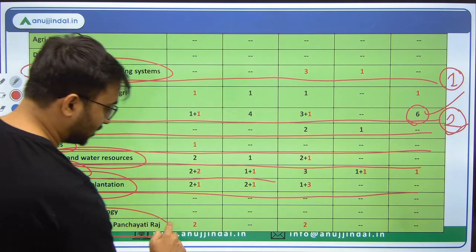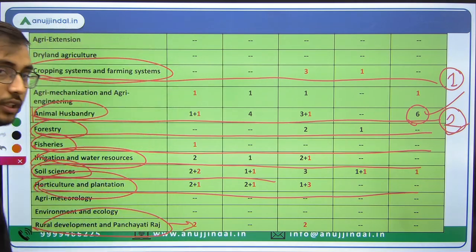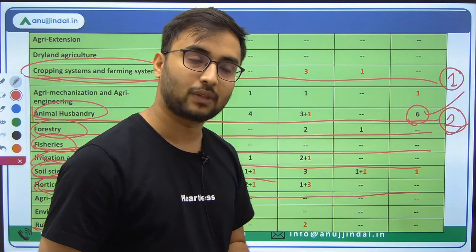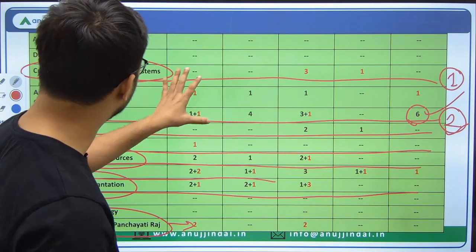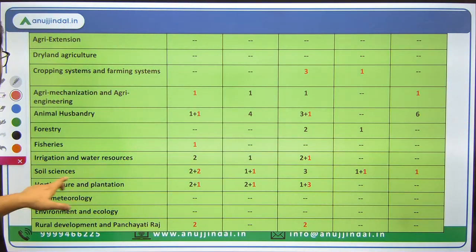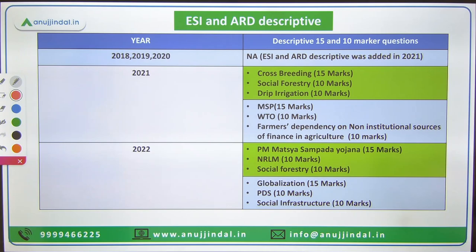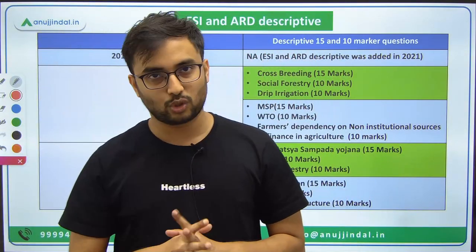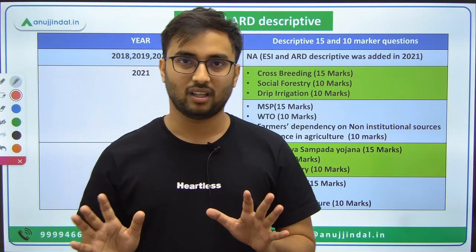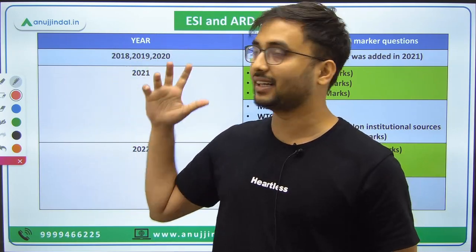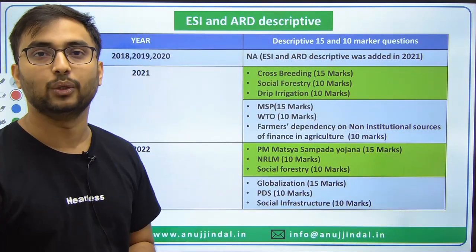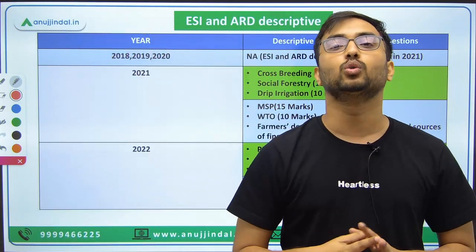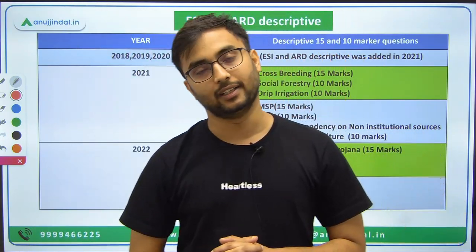For Rural Development, Panchayati Raj, and related topics, questions will come directly from government schemes and PIB current affairs. The important chapters highlighted — Animal husbandry, Forestry, Fisheries, Irrigation, Soil science, Horticulture, Cropping systems, Farming systems — these will confirm your selection in the NABARD Phase 2 MCQ exam. Do not leave them. MCQs were previously 65 in number but after adding descriptive in 2021, they were reduced to 30.